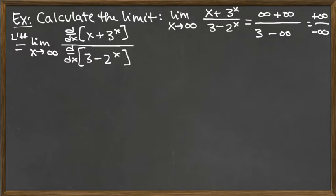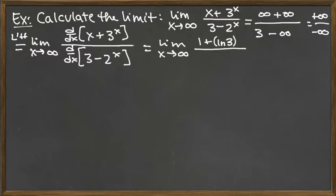The derivative on top is the derivative of X, which is 1, and then we've got to add to it the derivative of the exponential function 3 to the X. Those exponential functions have the extra factor of natural log of 3 that comes out front, and then the derivative would be natural log of 3 times 3 to the X. On the bottom, the derivative of 3 is just 0, so we've got the minus sign and the derivative of 2 to the X, which is natural log of 2 times 2 to the X.